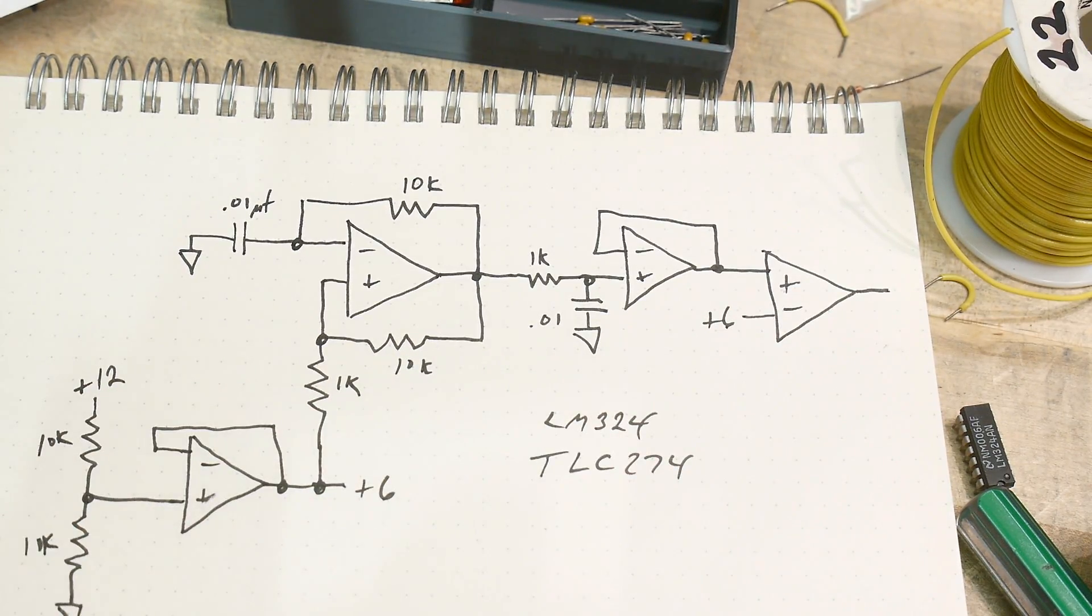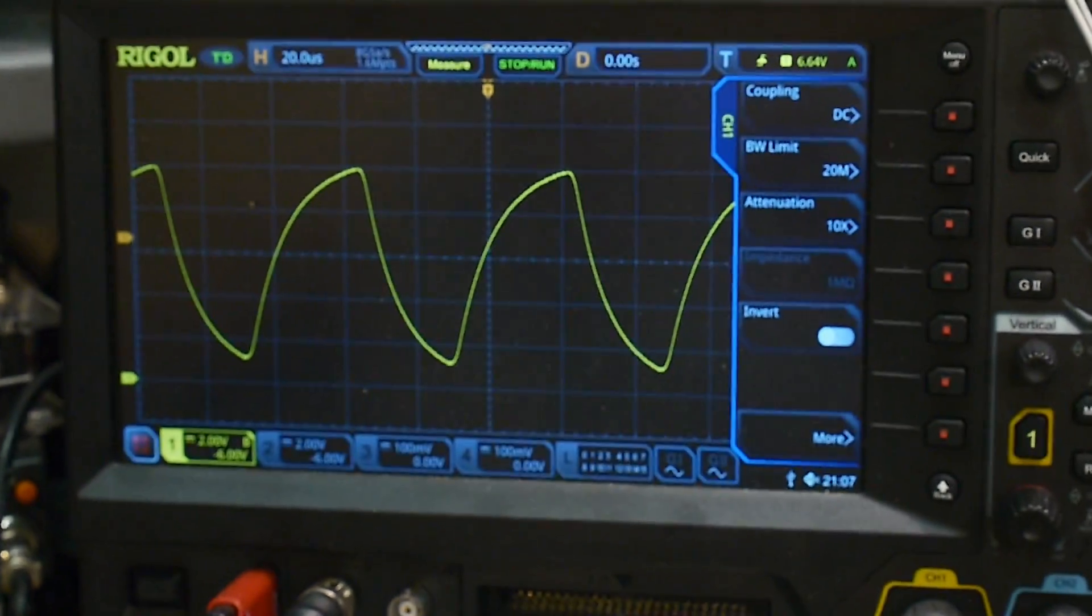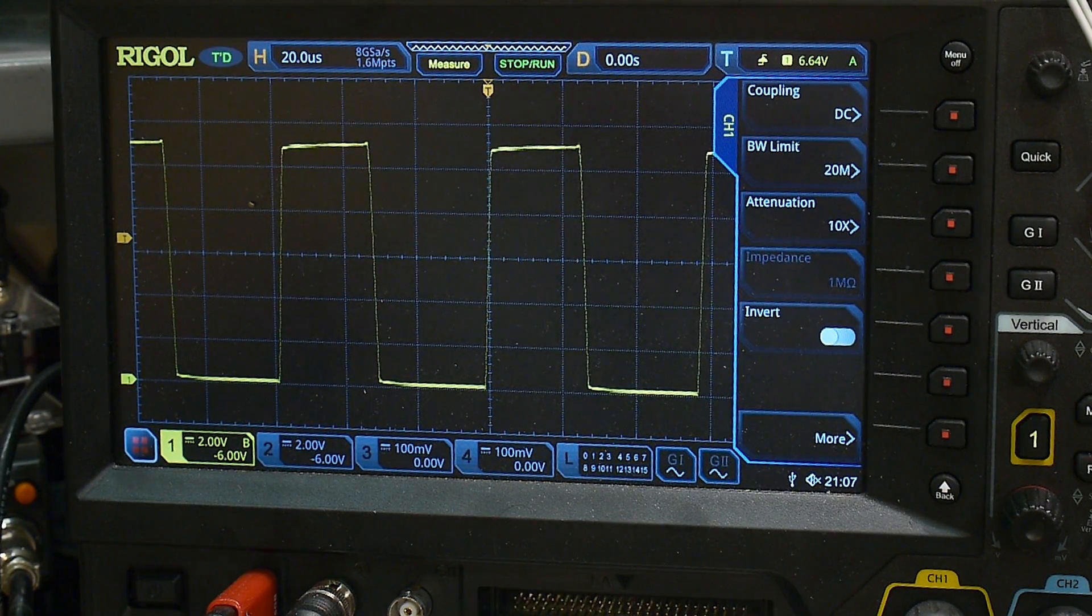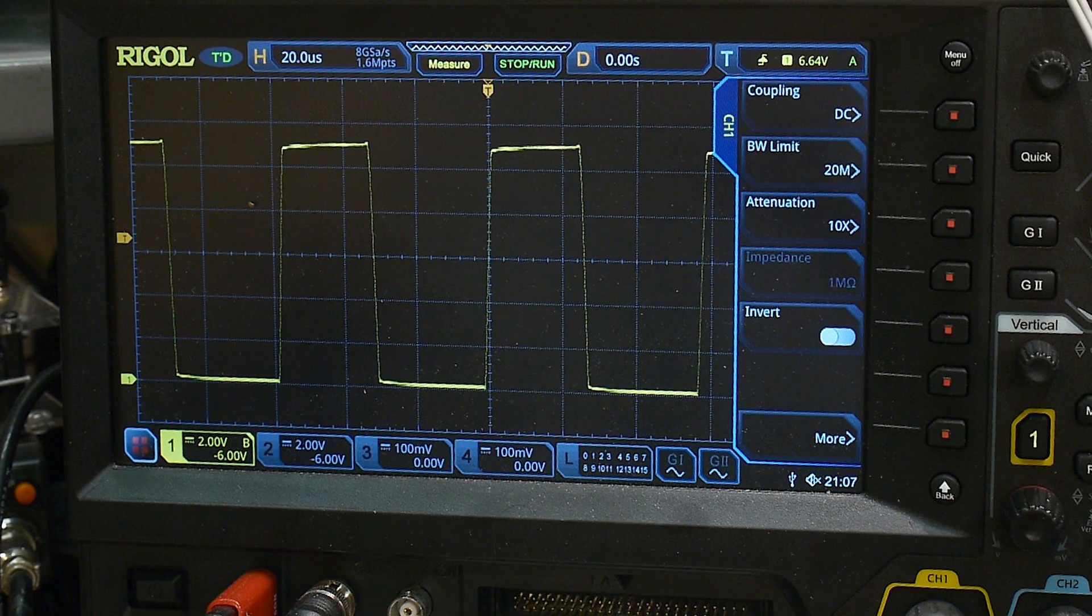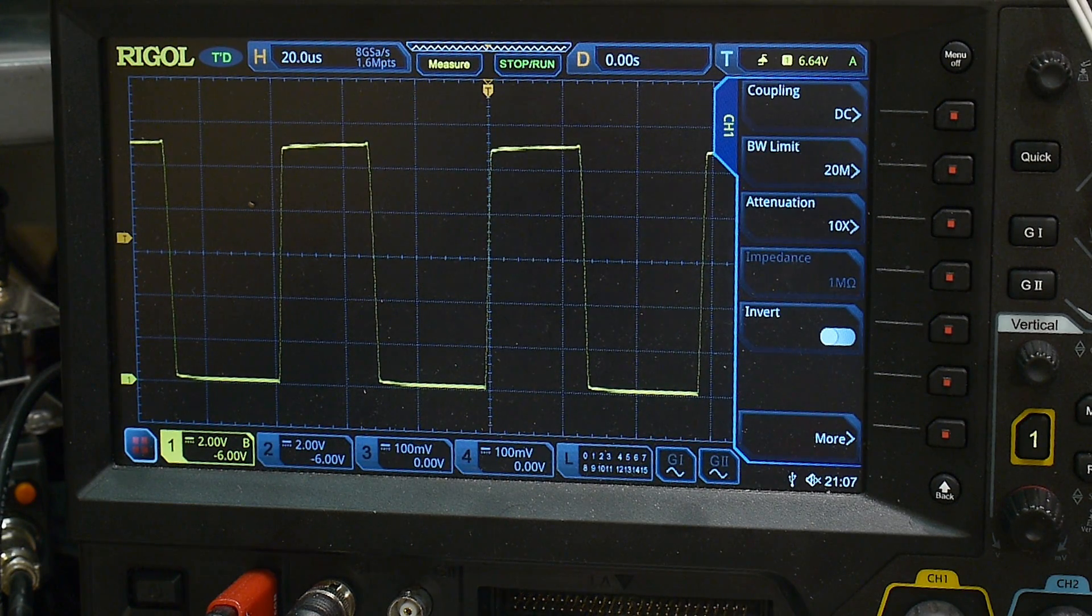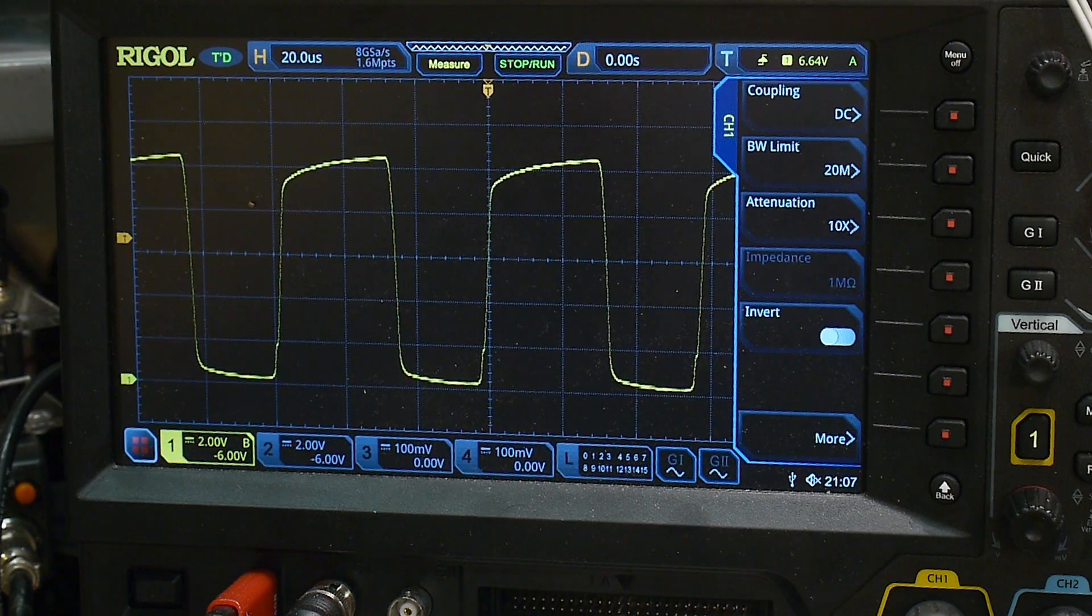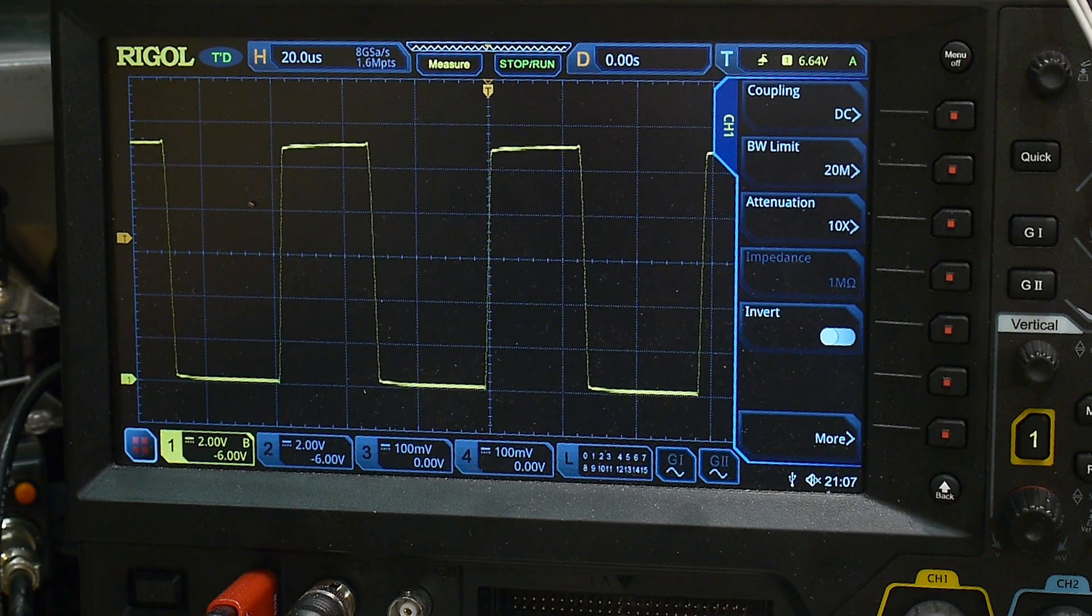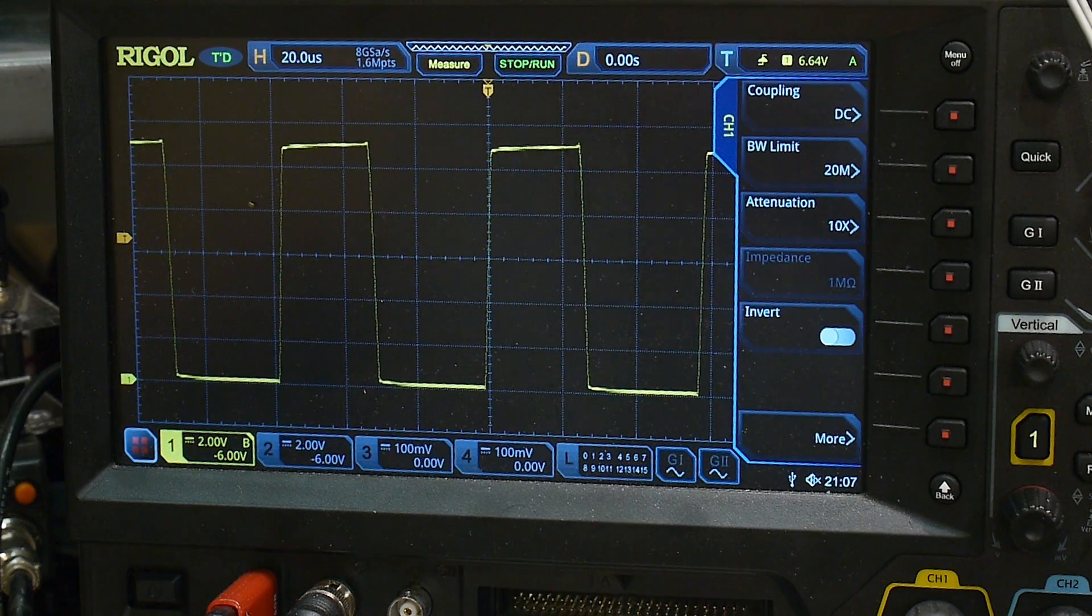What we're going to do is take that triangle wave that I've just generated and run it through a comparator. We'll compare it at 6 volts. Let me move my scope probe over and there we go - now we have a square wave again. I think it makes a lot of sense.